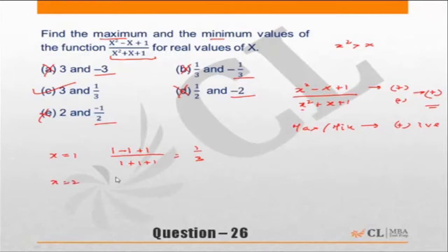If I put x equal to 2 the expression would be 2 square is 4 minus 2 plus 1 and denominator will be 4 plus 2 plus 1. 5 minus 2 is 3, 3 upon 7.